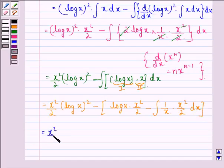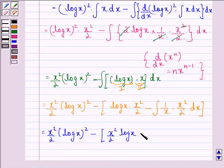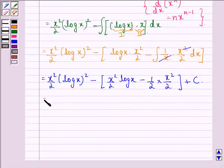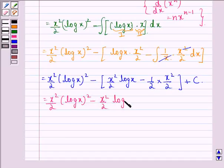This gives x²/2·(log x)² minus x²/2·log x, and then the x gets cancelled, leaving 1/2 times the integral of x dx, which is x²/2, plus some constant c. So this becomes x²/2·(log x)² minus x²/2·log x plus 1/2·x²/2 plus c.